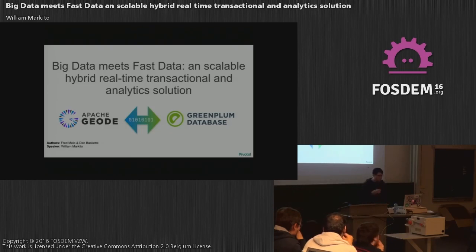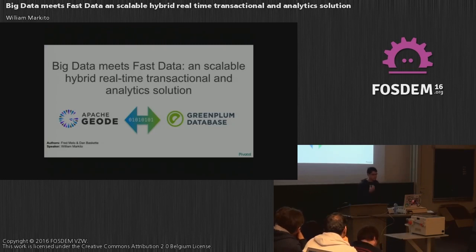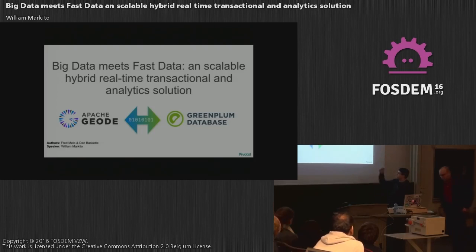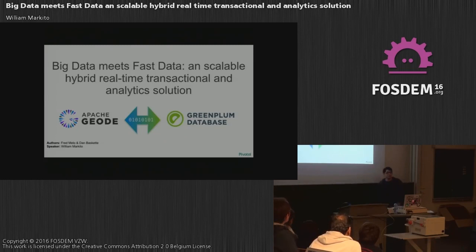My name is William, I work for Pivotal. I work in the Geode engineering, or GemFire, which is actually the name of the commercial product — that's the commercial version of the open source project named Geode. The idea is to talk about how you can integrate a system focused on big data, such as Greenplum, and operate with fast data in memory using an in-memory data grid such as Geode. You can do transactional workloads in Geode, and if you need to do machine learning or more complex querying, you can do that in Greenplum. So, how can you make this integration easier?